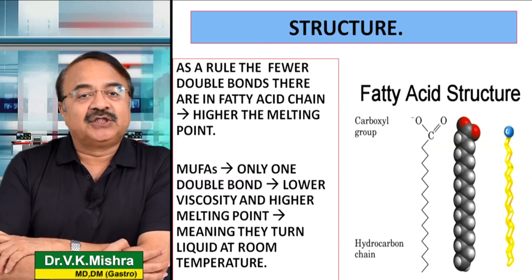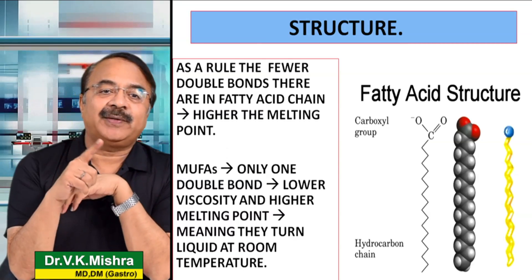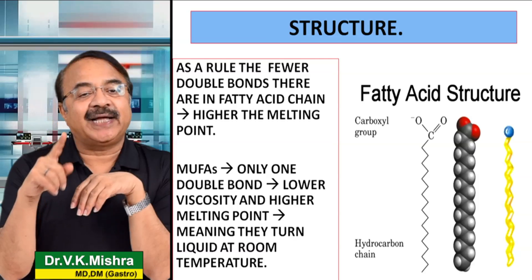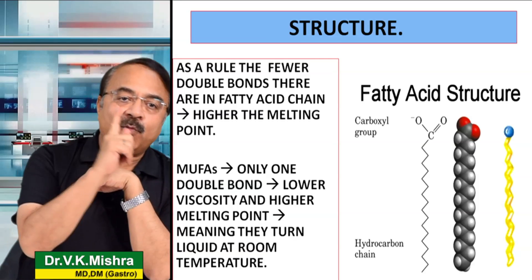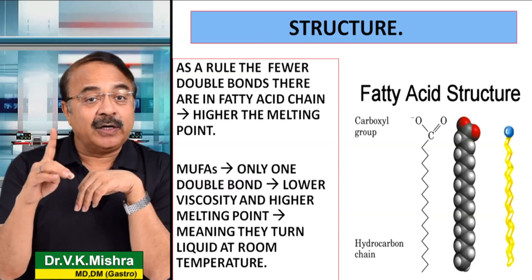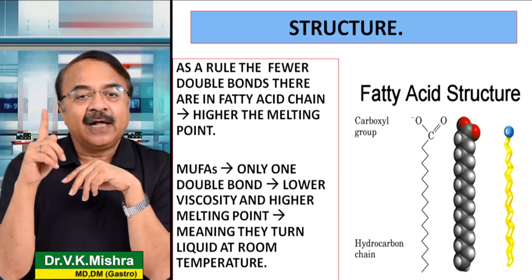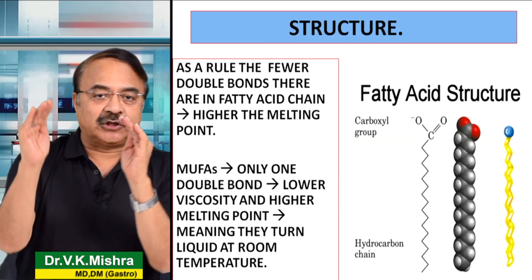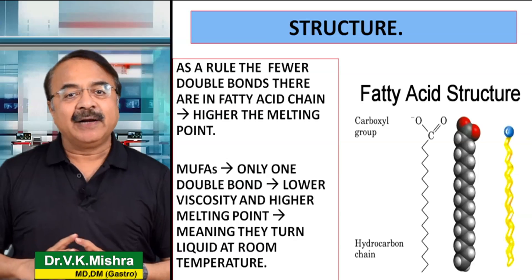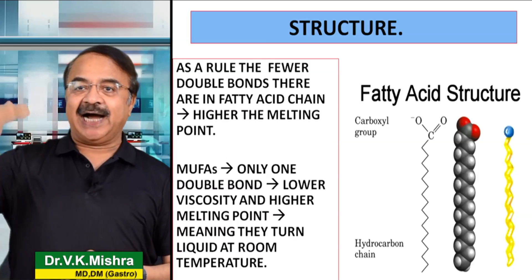As a rule, जितने double bond कम होंगे, उतना ही वास्तव में जो भी fat होगा, उसका जो melting point है, वो higher होगा. जहाँ तक mono unsaturated fat का सवाल है, they have only one bond. चूँकि इसमें सिर्फ एक ही bond होता है, तो इनकी viscosity low होती है, इसका मतलब ये पतले होते हैं. Number two, इनका जो melting point है, ये high होता है.